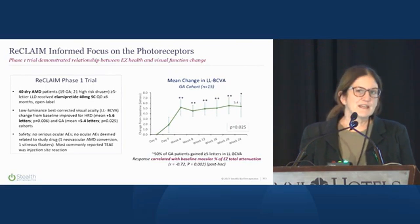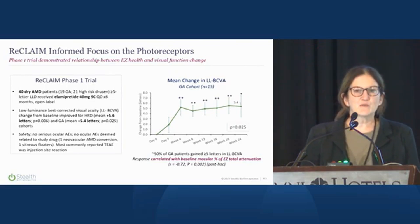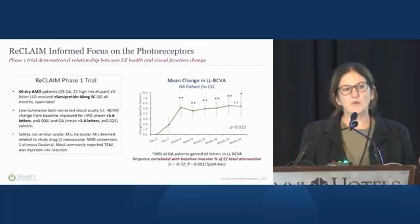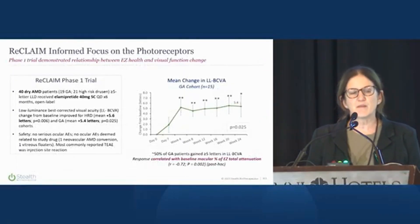In a Phase 1 clinical trial in patients with GA — 19 patients, six months, no control — we did see improvements in low-light visual acuity, which was our primary assessment of visual function. Post-hoc analysis showed this was most highly associated with baseline ellipsoid zone health, so that was an endpoint we carried into the Phase 2 on a pre-specified basis.